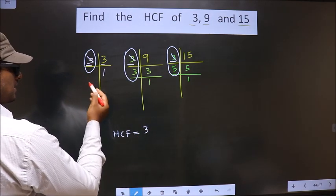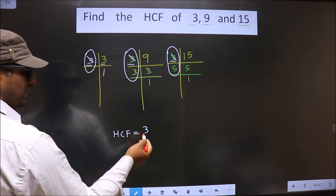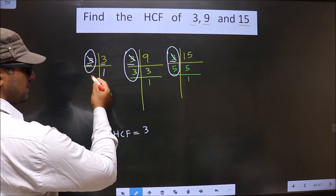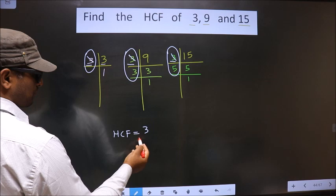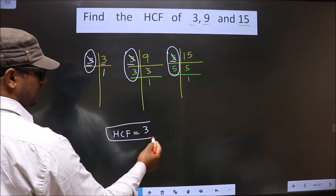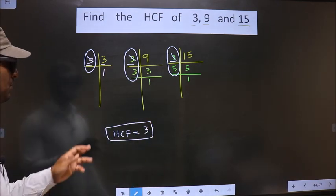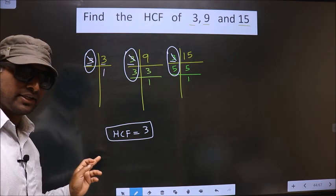No more numbers are present. So we got only one number present in all the three places. So this is our HCF. Am I clear?